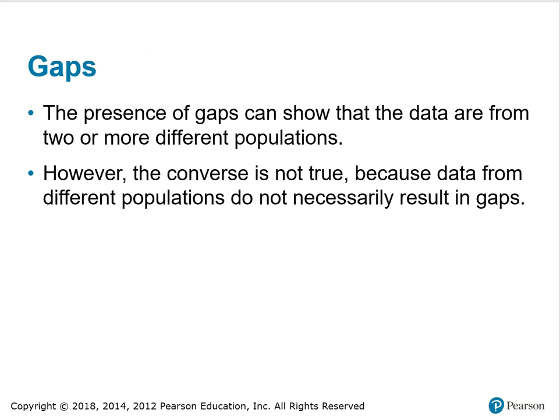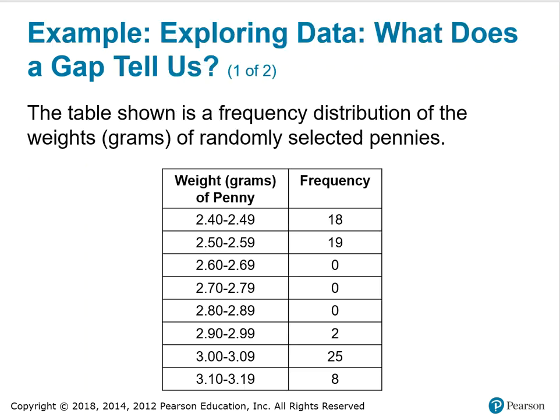Gaps: the presence of gaps can show that the data are from two or more different populations. However, the converse is not true, because data from different populations do not necessarily result in gaps.